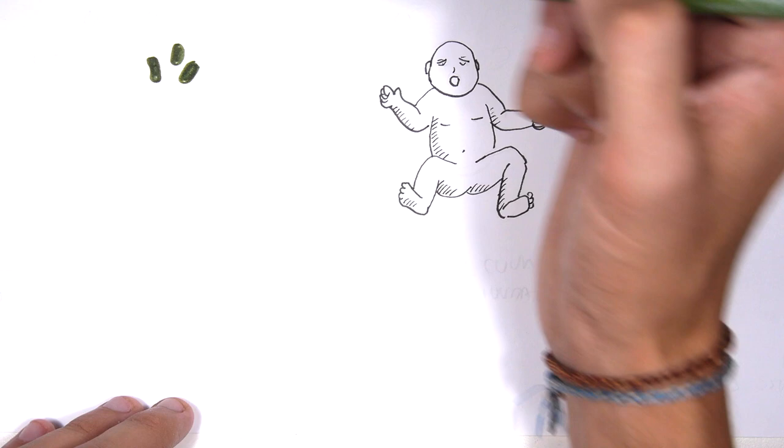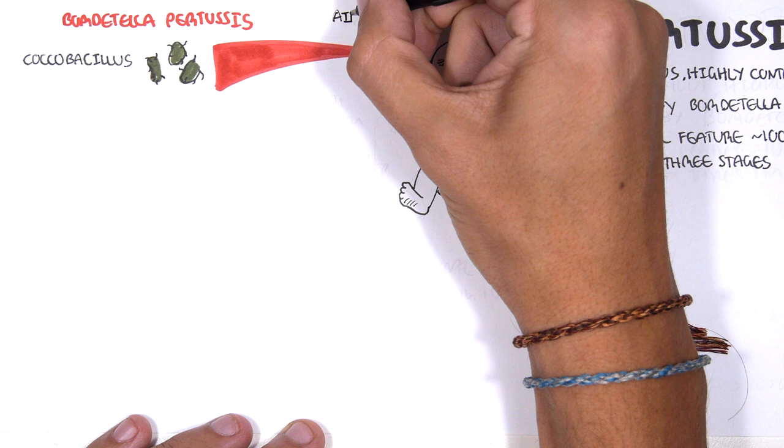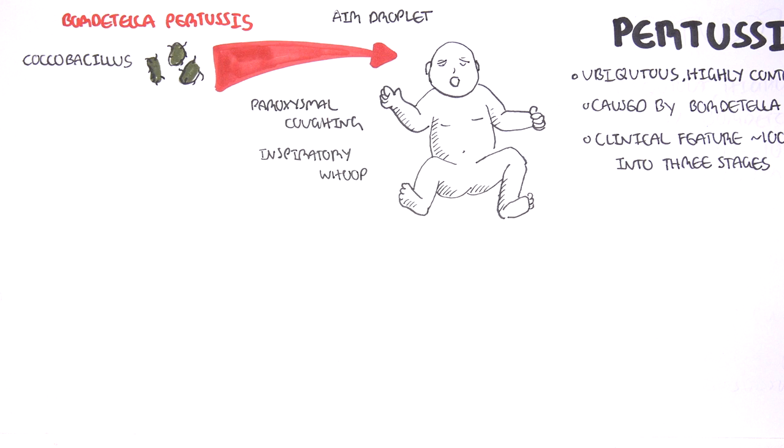From here, the infant will develop signs and symptoms such as paroxysmal coughing, inspiratory whoop, and post-tussive vomiting. As mentioned, the clinical course is a classic 100-day cough.